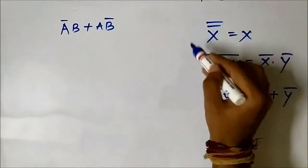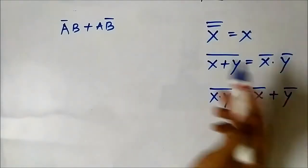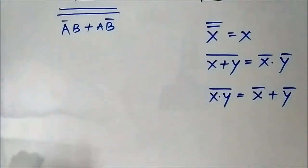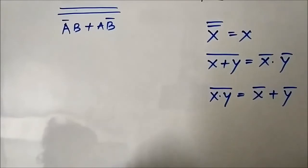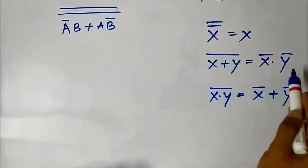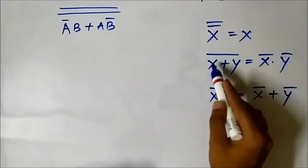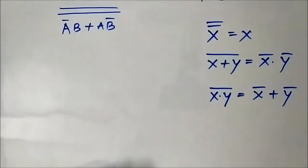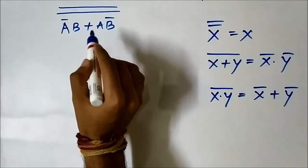We know the rule of Boolean algebra that when we double complement a signal, we get the same signal. So here we will apply a double complement because it causes no change in the value of the signal. Next, we will use De Morgan's theorem, which converts an OR expression into an AND expression.